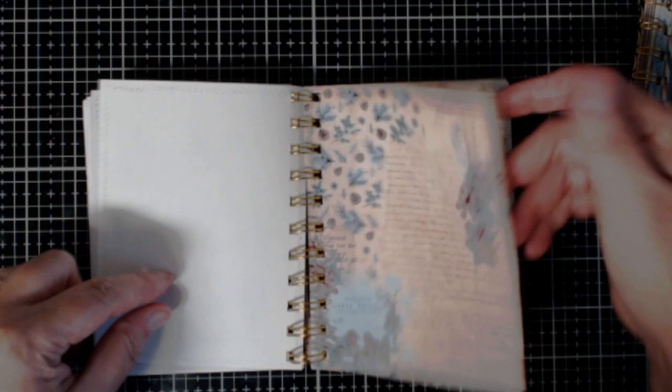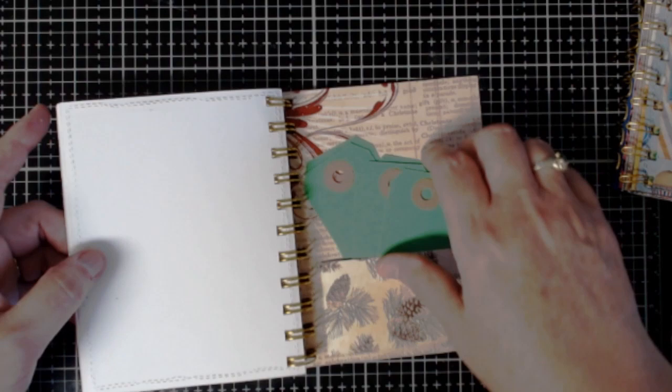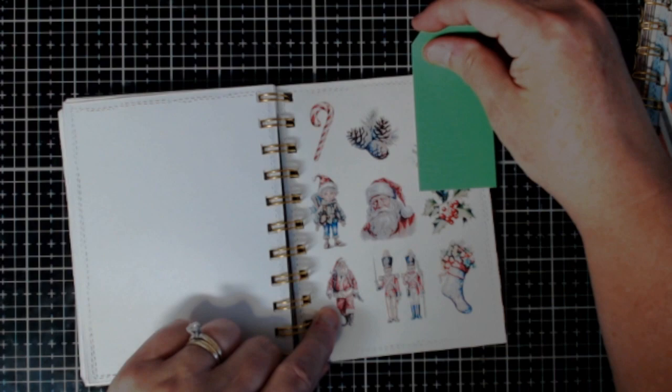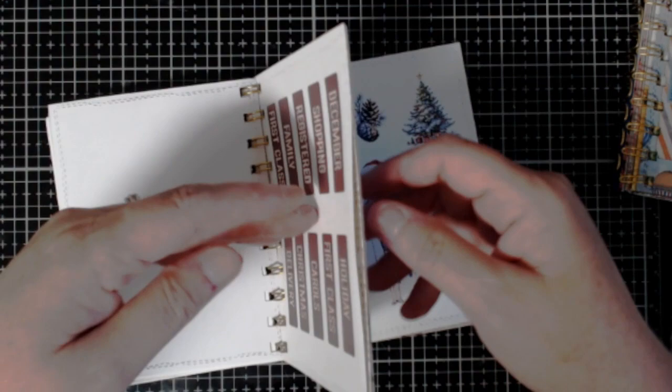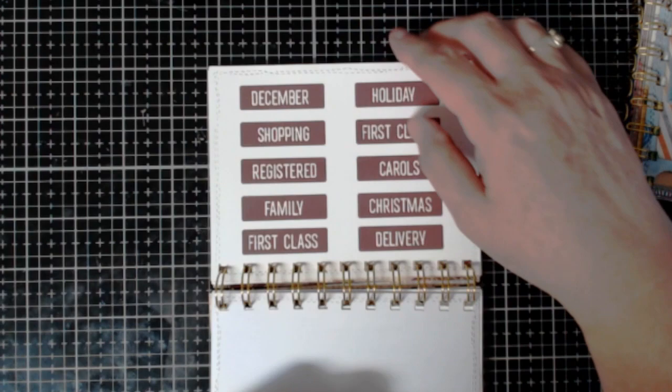I also included some tags in the back. So if you wanted to make some Christmas tags, these small little ephemera pieces are great for that as well. Now I also included these labels which you can tear out and you can cut. And you can use these for cards as well.